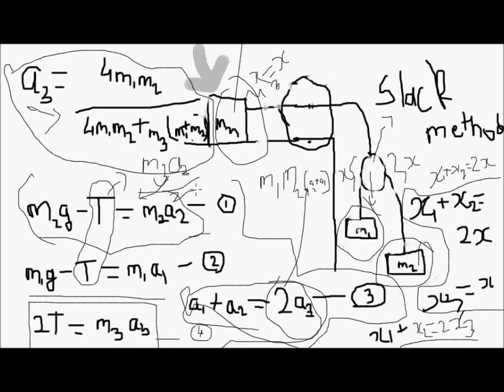Once you have a3, substitute it back to get the value of a2, and do the same to get the value of a1. That makes it quite easy to find the accelerations a1, a2 and a3.